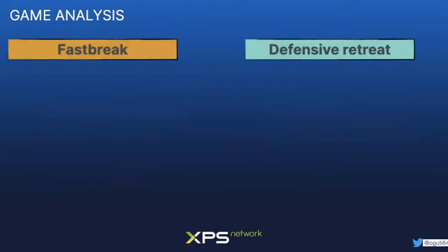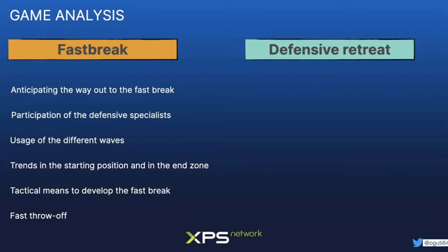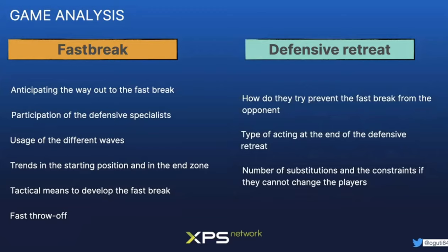For the transitional game — the fast break and defensive retreat — it is not enough to run faster along the court. We take into account whether the team anticipates how the fast break happens, whether defensive specialists participate, the different waves, the starting positions, and whether there are tactical means to develop in the fast break. We also consider how teams try to prevent the opponent's fast break, the type of acting at the end of the defensive retreat, substitutions, and the constraints if they cannot change players — because this is very important.